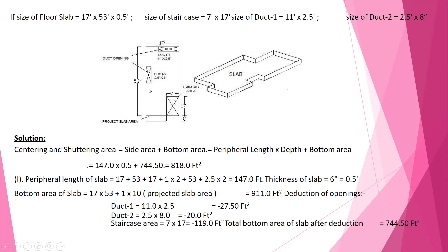The peripheral length of the slab: 17 feet plus 53 feet plus 17 feet plus 1 foot, multiplied by 2, plus 53 into 2, plus 2.5 into 2 — that is 147 feet. Slab thickness is 6 inches. Bottom area of the slab is 17 into 53, plus 1 into 10 (projected slab area), that is 911 square feet. Deductions: duct one is 11 feet by 2.5 feet equals 27.5 square feet; duct two is 2.5 by 8 equals 20 square feet. Staircase 7 feet by 17 feet equals 119 square feet. Total bottom area after deductions is 744.5 square feet.